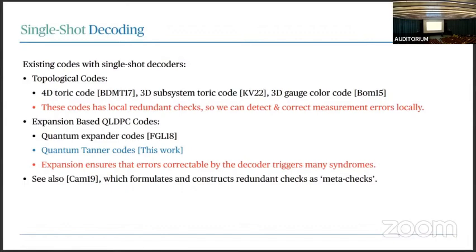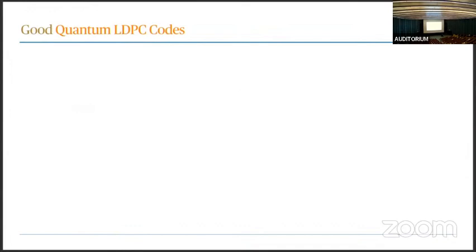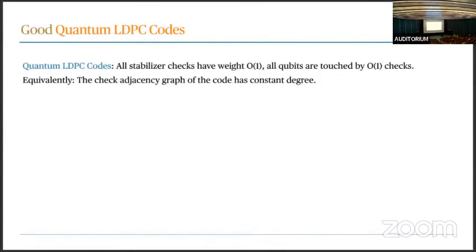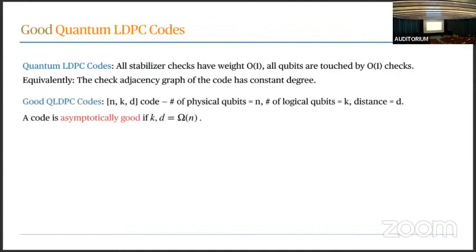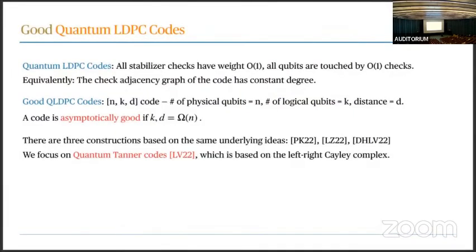Let's go into a bit more about good quantum LDPC codes. Quantum LDPC codes: the stabilizer checks have constant weight, and all qubits are touched by a constant number of checks as the family scales larger. Asymptotically good codes: the number of logical qubits (logical dimension) and the distance scale linearly with the number of physical qubits. Since 2021 we now know three families of asymptotically good quantum LDPC codes, all based on the same underlying mathematical idea: the left-right Cayley complex.